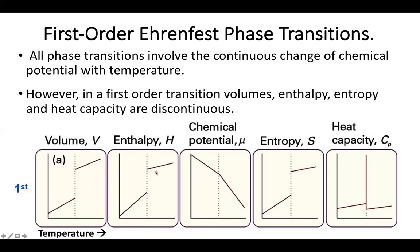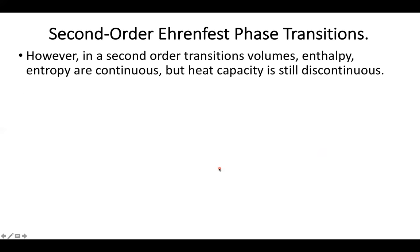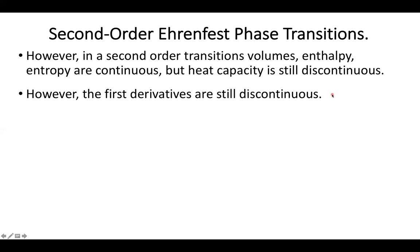However, it is worth noting that there is a certain subset of systems in which not only do they have a continuous change in chemical potential upon heating, but they also see continuous changes in volumes, enthalpies, and entropies. However, they still see a discontinuous change in heat capacity. Even though all these values are continuous, their first derivatives are still discontinuous, as demonstrated by the heat capacity.